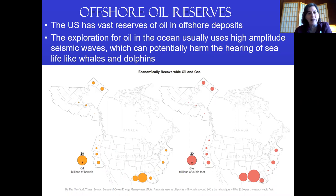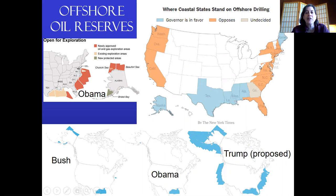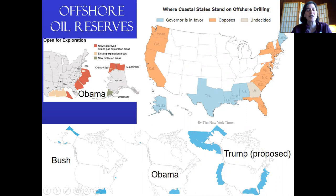Exploration for oil in the ocean requires high-amplitude seismic waves, which can potentially harm the hearing of sea life. The Obama administration approved areas off the East Coast for oil and gas exploration, though most governors of those states opposed it. The Bush administration wanted to open up different areas, which Obama didn't approve. Trump proposed his own expanded areas. States have a say, and many oppose offshore drilling due to potential pollution and accidents, while supporters point to economic benefits and jobs.